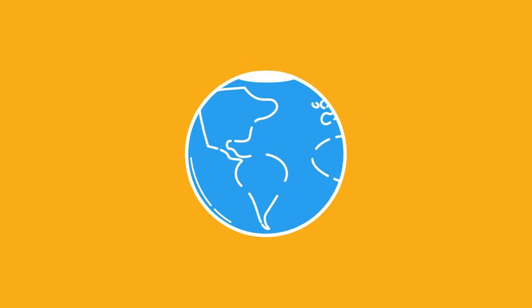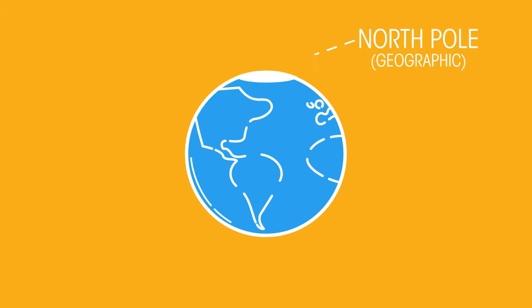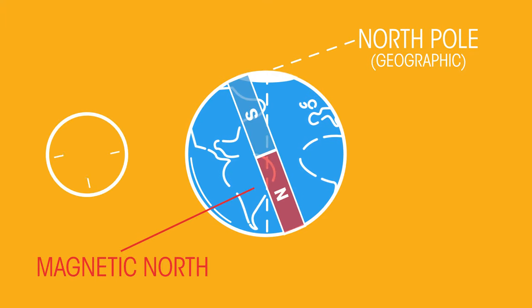Did you know that the north pole is not the same as the magnetic north, as the north pole is determined by the Earth's spin and the magnetic north by the direction of compass points?